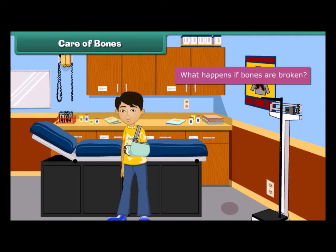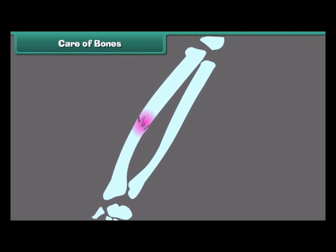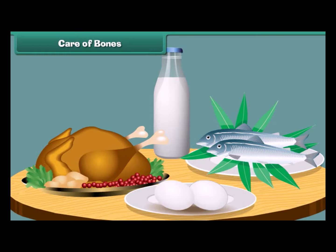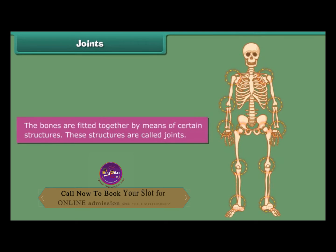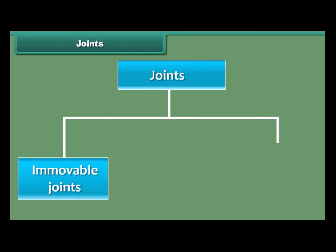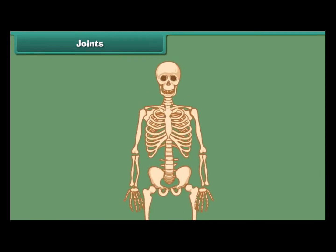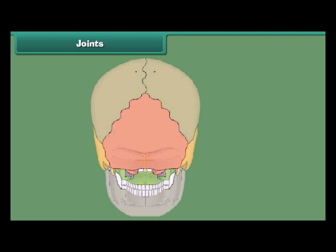The bones are fitted together by means of certain structures called joints. Joints facilitate body movements. There are two main types of joints: immovable joints and moveable joints. Immovable joints are the joints where no movement of the bones is possible. The joints of the bones of the skull are immovable joints.